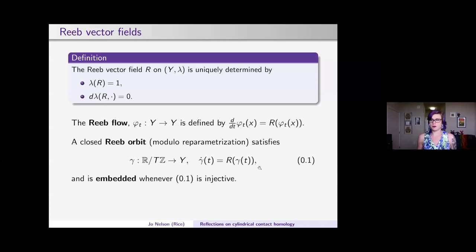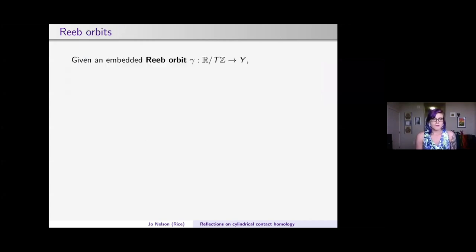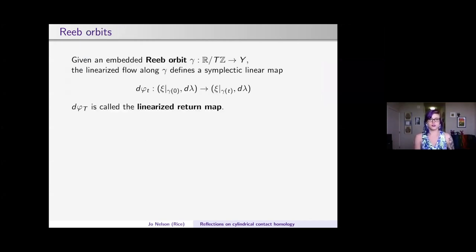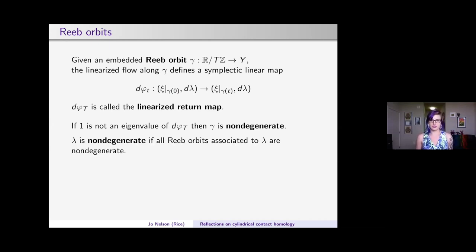A Reeb orbit is embedded (or simple) whenever this map is injective. Rather than using the word 'simple,' we use 'embedded,' though that differs from SFT nomenclature. Given an embedded Reeb orbit, we restrict the linearized flow along the orbit to the contact planes, giving a symplectic linear map. At time T we get the linearized return map. If one is not an eigenvalue of this map, the orbit is non-degenerate. A contact form is non-degenerate if all its Reeb orbits are non-degenerate.